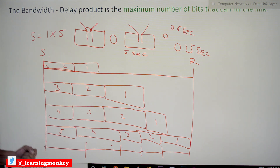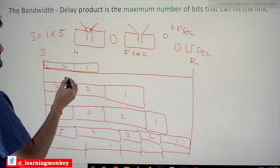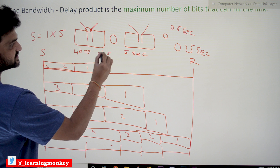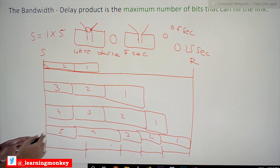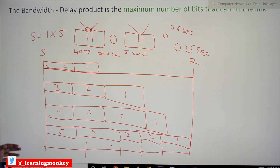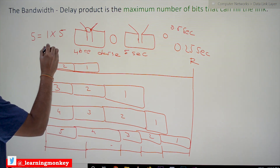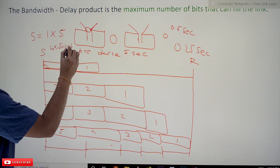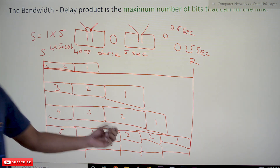For example, if the bandwidth of the channel is 4 bits per second and the delay is 5 seconds, how many bits can we fill the channel with? The bandwidth-delay product is 4 × 5 = 20 bits. We can fill this channel with 20 bits.